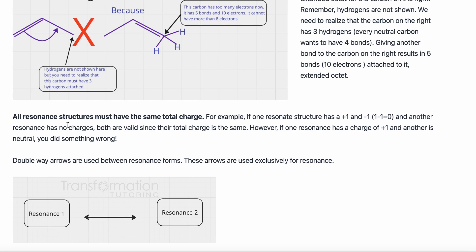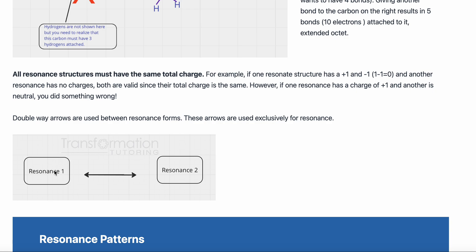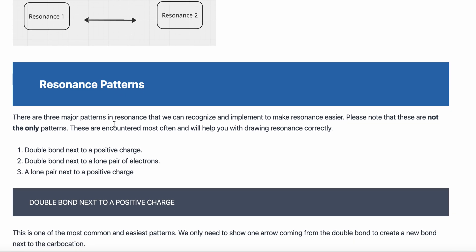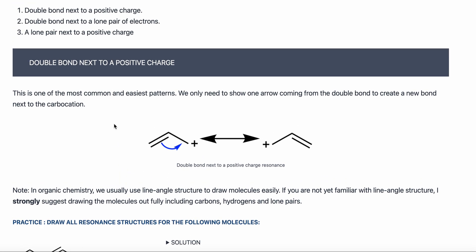Before moving on, there are a couple more rules. First, all resonance structures will have the same net charge. Also, whenever I draw my resonance forms, I must draw a double-headed arrow — this arrow with two heads represents that I am dealing with resonance. Now we will go ahead and look at the major resonance patterns.